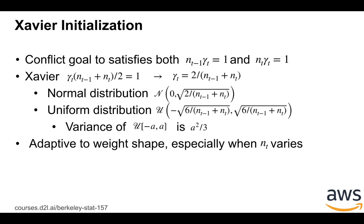Applying both constraints together, we get a conflict, because we cannot always guarantee that a layer has the same input and output size. So we cannot simultaneously satisfy n_{t-1} · γ_t = 1 and n_t · γ_t = 1. To trade off between them, Xavier initialization proposes using γ_t · (n_{t-1} + n_t) / 2 = 1, giving γ_t = 2 / (n_{t-1} + n_t) — that is, 2 over the sum of the input size and output size of this layer.